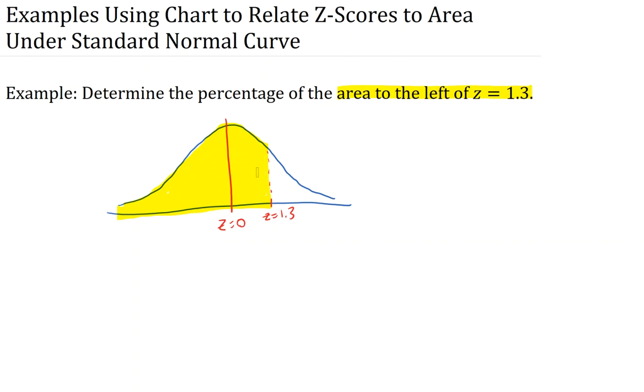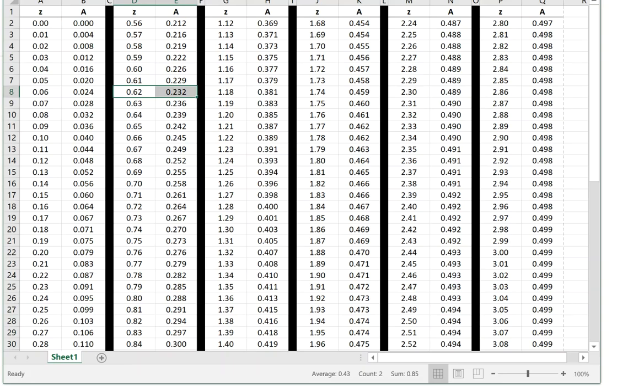So I clearly need to, the only z-score I have is 1.3. I need to go to my chart and find the area that corresponds to that. So I've got my chart on another screen here. We're going to look up z equals 1.3. So whenever I go to my z column, come down to 1.3, the area is 0.403.